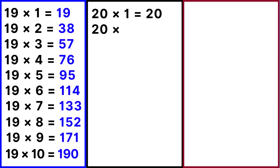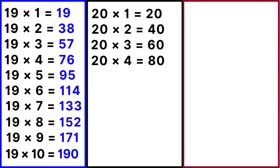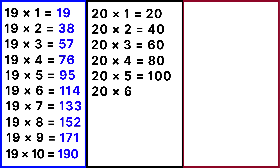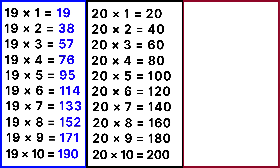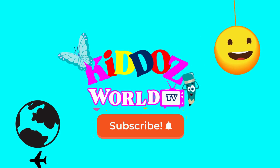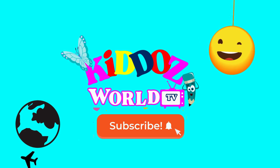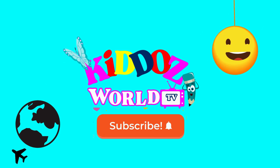Table of 20: 20 ones are 20, 20 twos are 40, 20 threes are 60, 20 fours are 80, 20 fives are 100, 20 sixes are 120, 20 sevens are 140, 20 eights are 160, 20 nines are 180, 20 tens are 200. Goodbye.